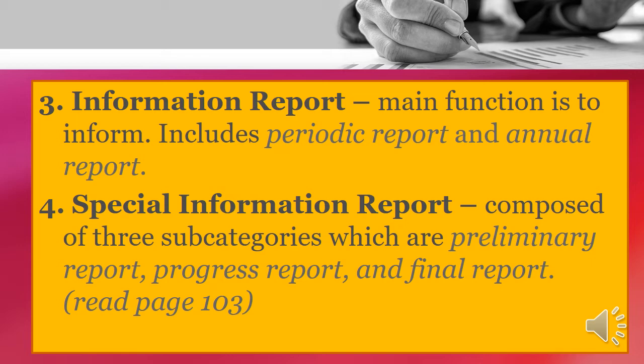Then we have the special information report, composed of three subcategories: preliminary report, progress report, and final report. The preliminary report is a type of special information report that collects information about a proposed project, including the costing, design, and other elements. The progress report records the history of an activity from the time it started up to the present date of writing. The final report is submitted after completing a project to show how plans were delivered.